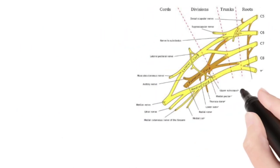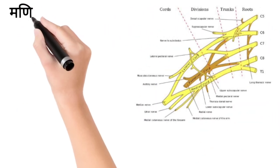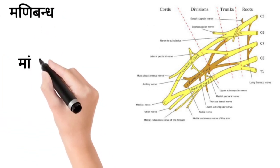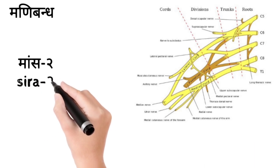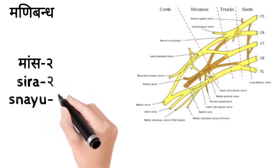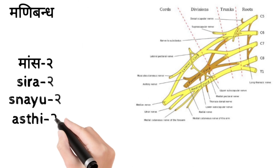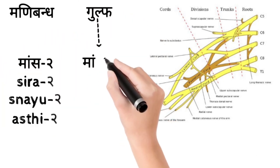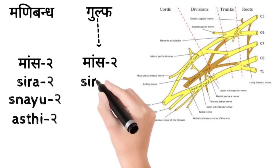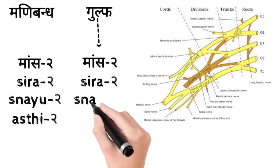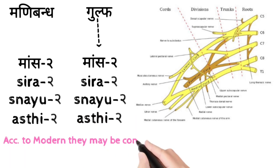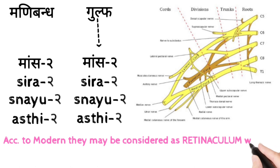Here I am attaching the picture of Brachial Plexus. Maniband region mein Mass ke doh, Sirah ke doh, Snayu ke doh aur Asthi ke doh Jal milenge. Gulf region mein Mass ke doh, Sirah ke doh, Snayu ke doh aur Asthi ke doh. Doh sabke Jal milenge. Maniband jo hota hai wo wrist hota hai aur Gulf hota hai ankle. According to Modern, they may be considered as retinoculum which are present in the wrist and ankle.